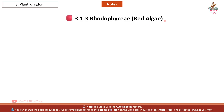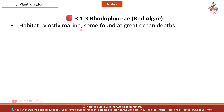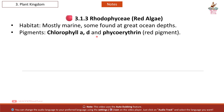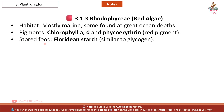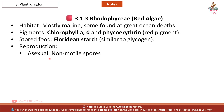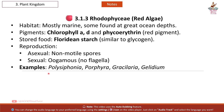Rhodophyceae — red algae. Habitat: mostly marine; some found at great ocean depths. Pigments: chlorophyll A, D, and phycoerythrin (red pigment). Stored food: floridian starch, similar to glycogen. Reproduction: asexual by non-motile spores; sexual by oogamy with no flagella. Examples: Polysiphonia, Porphyra, Gracilaria, Gelidium.